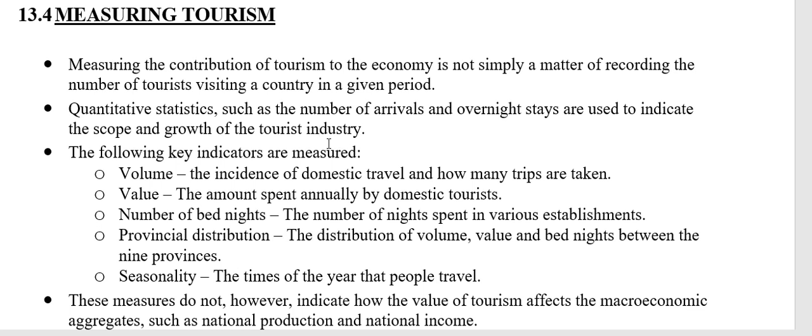We also use an indicator called overnight stays. For something to be classified as tourism, it has to involve at least one night's accommodation — you have to stay for at least one night. So we count literally how many people stayed in the hotel, how many nights hotel beds were booked, to see if it's increasing or decreasing.